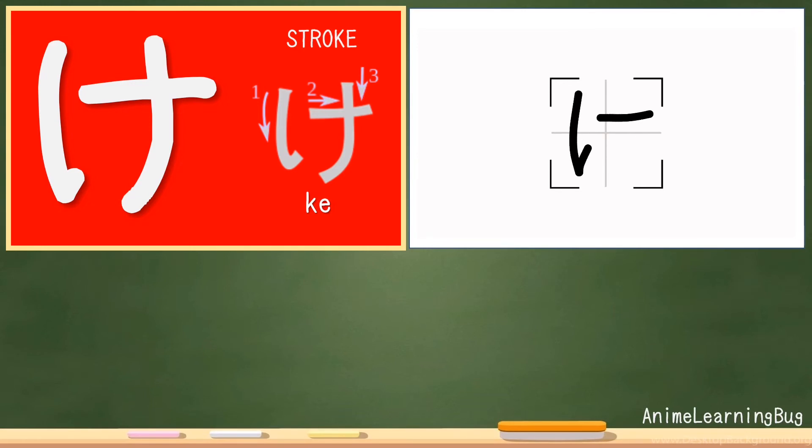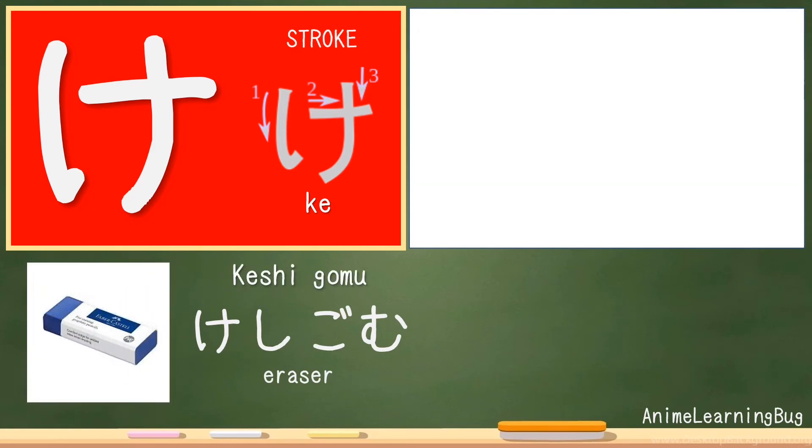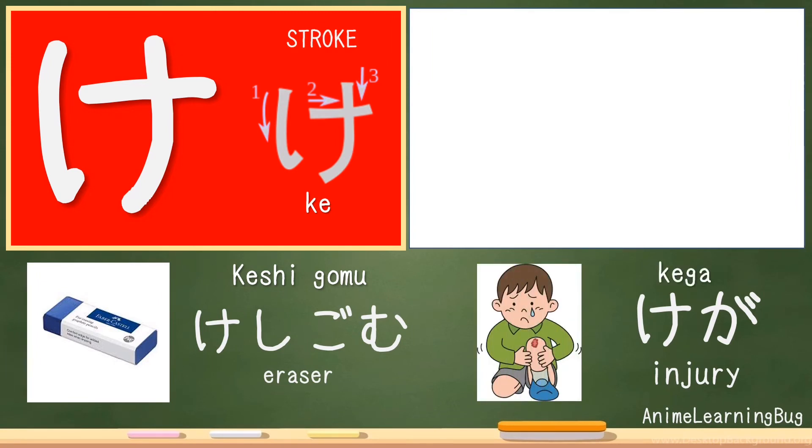Okay, for examples, we have here keshi gomu, which means eraser, and kega, which means injury.